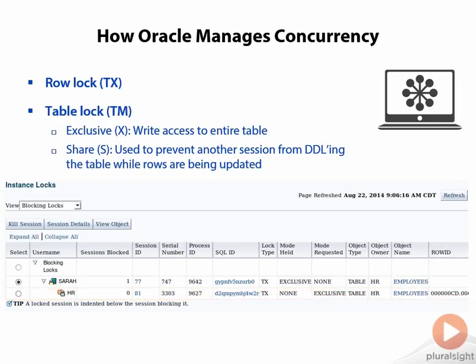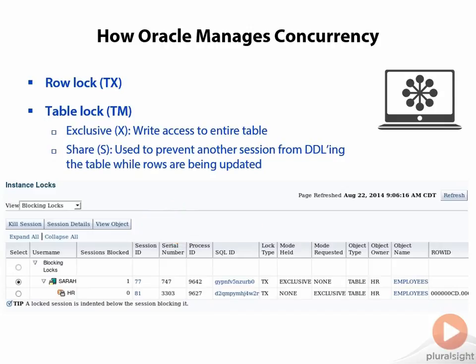You notice the three buttons: kill session, session details, and view object. You're going to have to decide as a DBA what you want to do. The session that's killed is going to have to redo their code — they're going to have to rerun their transaction because it's going to get rolled back.